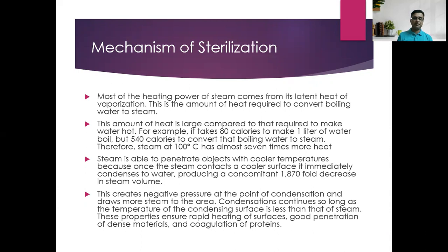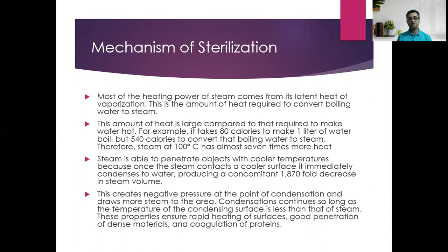Most of the heating power of steam comes from its latent heat of vaporization. This is the amount of heat required to convert boiling water to steam. When we heat water, first it gets boiled, and then boiling water converts to steam. That amount of energy required to convert boiling water to steam is called latent heat of vaporization, and that is the heating power of steam which ultimately kills the microorganisms. This amount is large compared to that required to make water hot — it takes only 80 calories to bring one liter of water to boil, but 540 calories to convert that boiling water to steam. Therefore, steam at 100°C has almost seven times more heat than hot water.